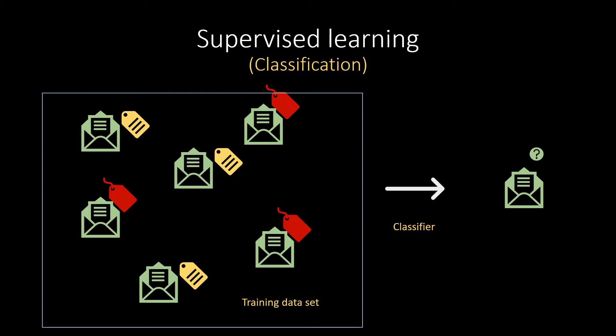We can see in the illustration that in the training data set, mails are already labeled as spam with red tags, while yellow tags indicate good mails. Once the classifier learns this pattern, it is able to classify new mails into spam or not spam.